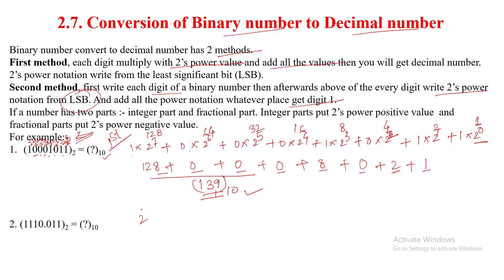Now the second method. First, write all the digits: 1, 0, 0, 0, 1, 0, 1, 1. Then, above every digit, write the 2's power notation starting from the LSB — that means from right to left.